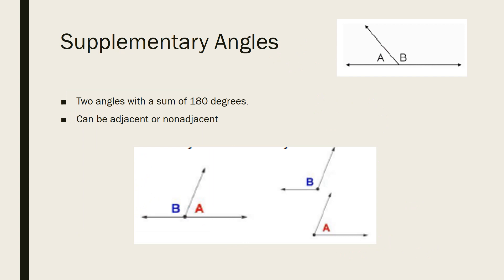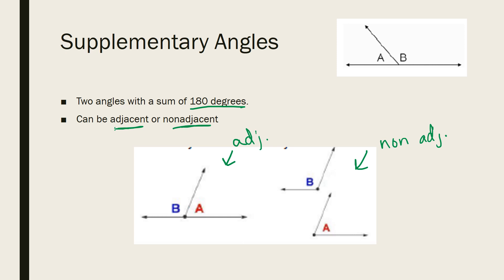The next definition we should talk about is supplementary angles. Looking back at our notes, supplementary angles are two angles with a sum of 180 degrees. Similarly to complementary angles, they can be adjacent or non-adjacent. Remember, adjacent means touching. The diagram on the left would be adjacent, and the two on the right would be non-adjacent because they are not touching. Remember that supplementary means two angles that add up to 180 degrees.